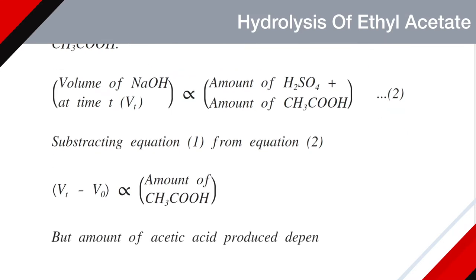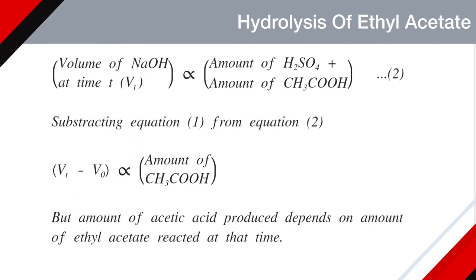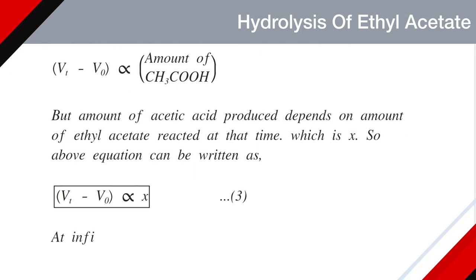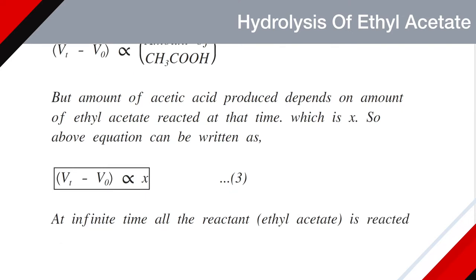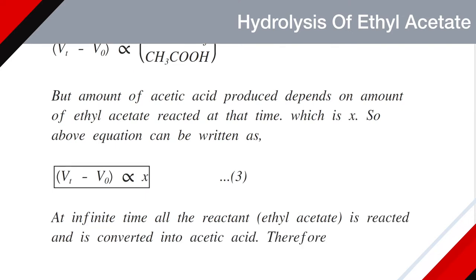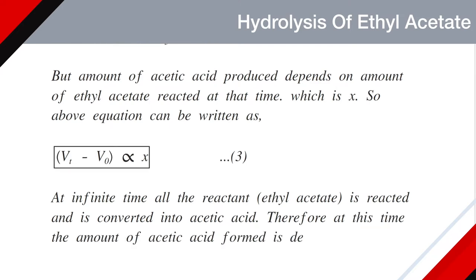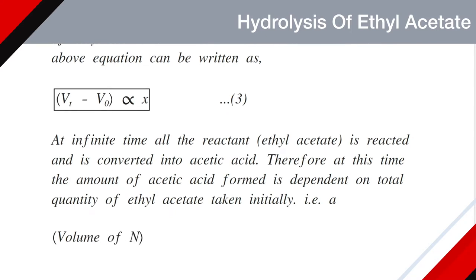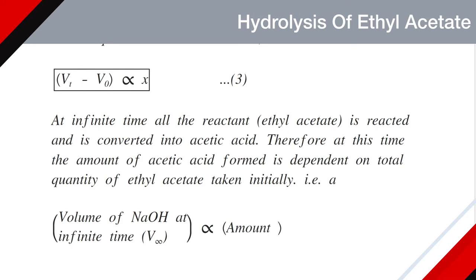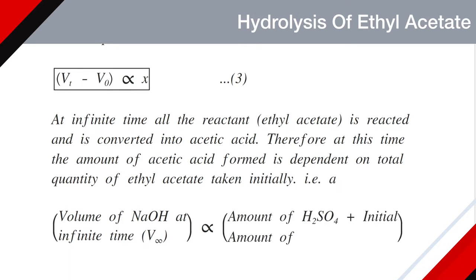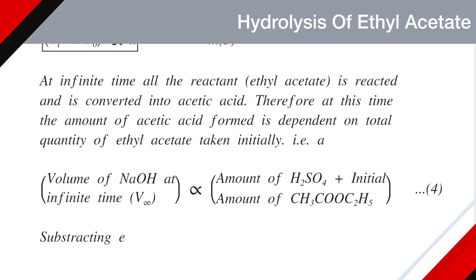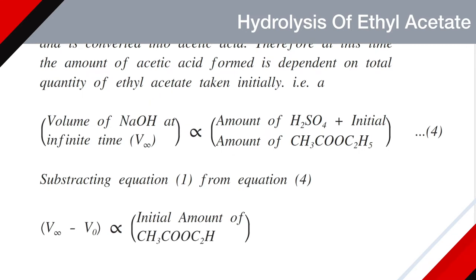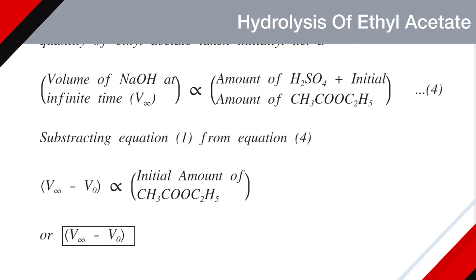The amount of acetic acid produced depends on the amount of ethyl acetate reacted at that time, which is x. So the above equation can be written as Vt minus V0 is proportional to x. At infinite time, all the ethyl acetate is reacted and converted into acetic acid. Therefore, the volume of sodium hydroxide at infinite time, V∞, is proportional to amount of sulphuric acid plus initial amount of ethyl acetate. This is equation number four. Subtracting equation one from equation four gives V∞ minus V0 is proportional to initial concentration of ethyl acetate, A. This is equation number five.